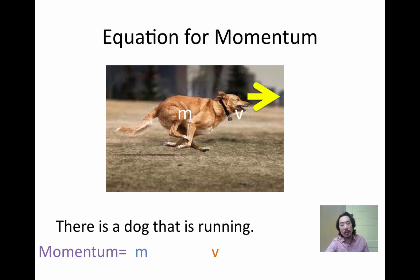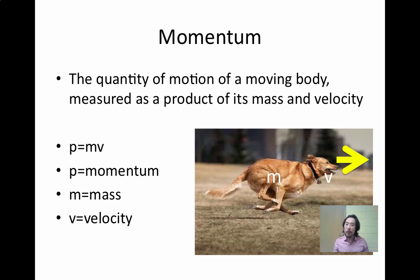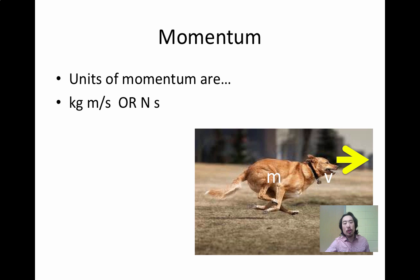From there, we can come up with the momentum equation. Momentum is equal to a mass that is moving, or m times v. The definition of momentum is the quantity of motion of a moving body, measured as a product — which means multiply — of its mass and velocity. A little note: momentum is represented by the variable p, not m, because m is mass. The units are kilograms times meters per second, or newton seconds — either or, so take your pick.